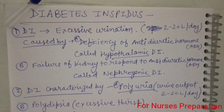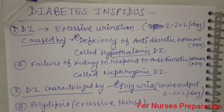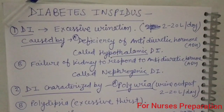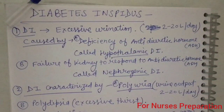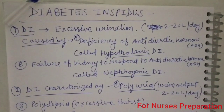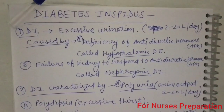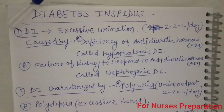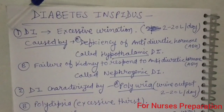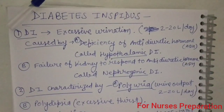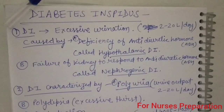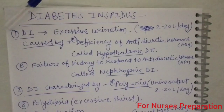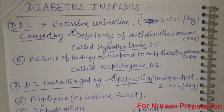Let's have an introduction about diabetes insipidus. Diabetes insipidus is a condition in which excessive urination occurs. A person who is suffering with DI is having excess urine output up to 20 liters per day.